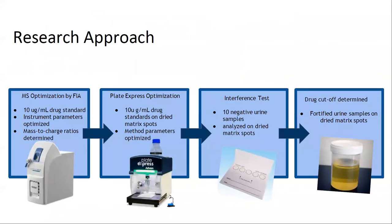The drugs used in this method were valproic acid, pregabalin, GHB, carisoprodol, meprobamate, topiramate, and gabapentin. First, the drugs were optimized to determine the ion mass-to-charge ratios that correspond to each compound as well as determine the instrument parameters that work best for each drug. This was done by directly injecting drug standards diluted in methanol into the mass spectrometer by flow injection analysis. After optimizing the drugs by direct injection, the methanol standards were optimized on the dried matrix spot cards. After optimization, the cutoff for each drug was determined — the lowest concentration at which the drug can be detected by the instrument.